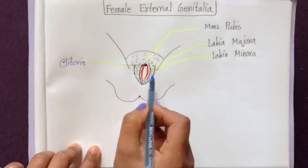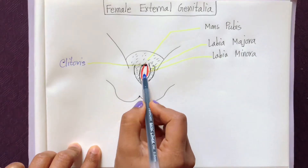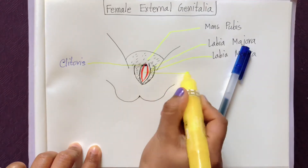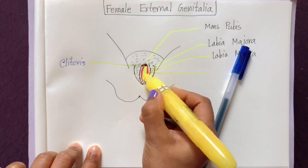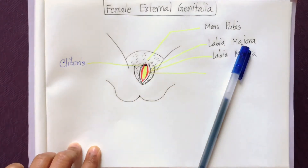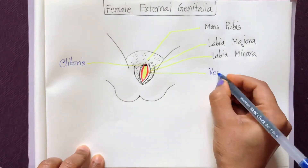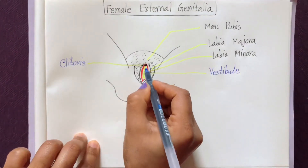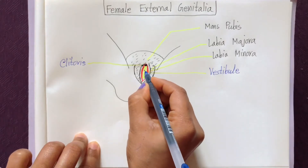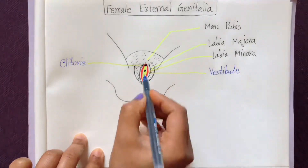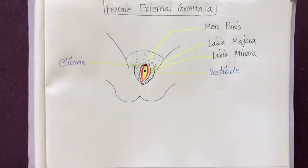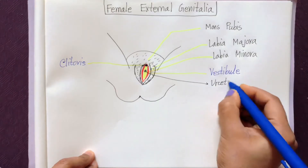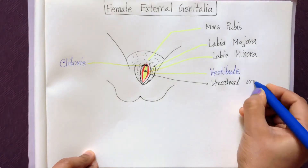The space between the labia minora is called the vestibule. Within the vestibule is the external urethral orifice — this is the opening through which urine comes out.